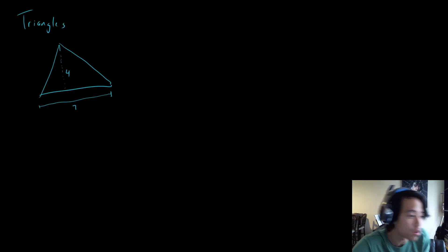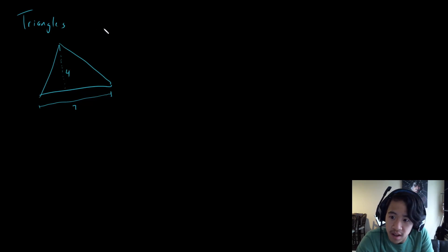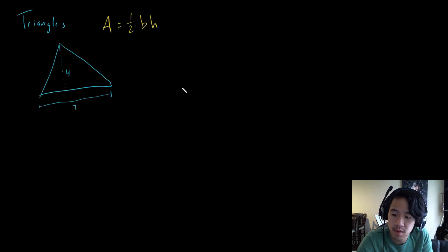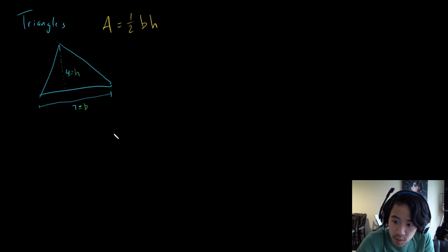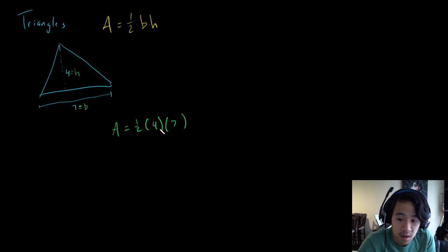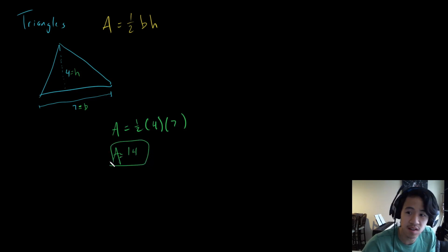We are going to move on to triangles now. The area of a triangle, as you probably know, is one half the base times the height. In this case, our base is 7 and our height is 4. So area equals one half times 4 times 7. Four times 7 is 28, and one half of 28 is 14, so our area is 14.